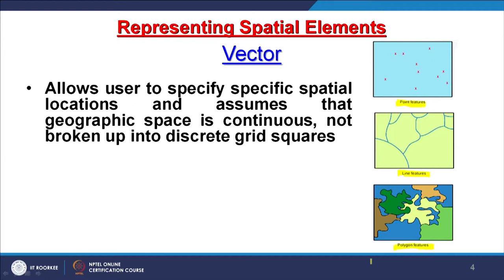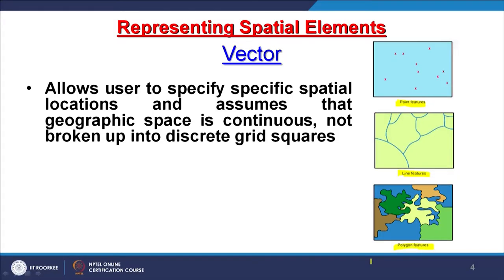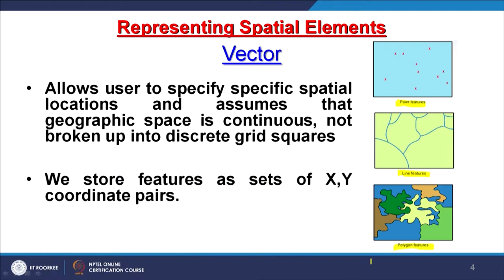You can have n number of attributes associated with a particular point data. Then in polyline or line data — also called line features — there is a string of x, y coordinates. If we know the origin and we know the destination, we can find the length — that becomes magnitude — as well as the direction. Polyline is a 2-dimensional vector entity where the begin point and end point are always the same, making a complete polygon.